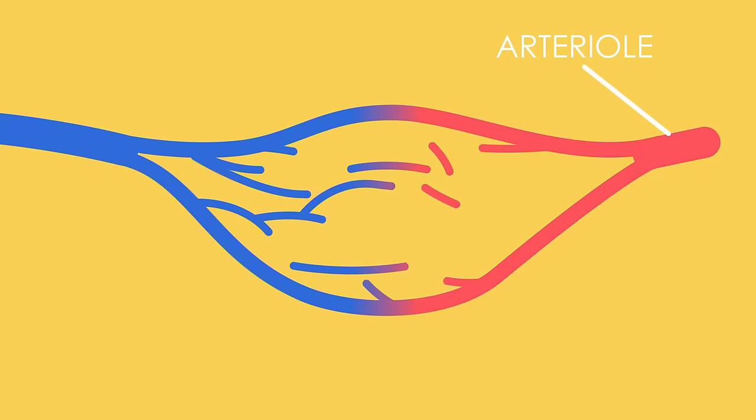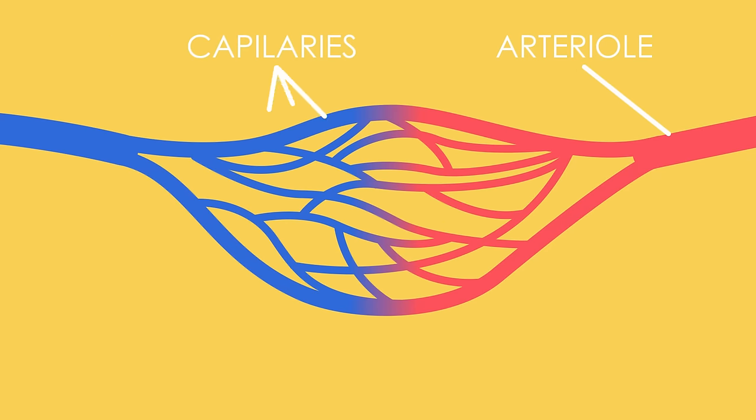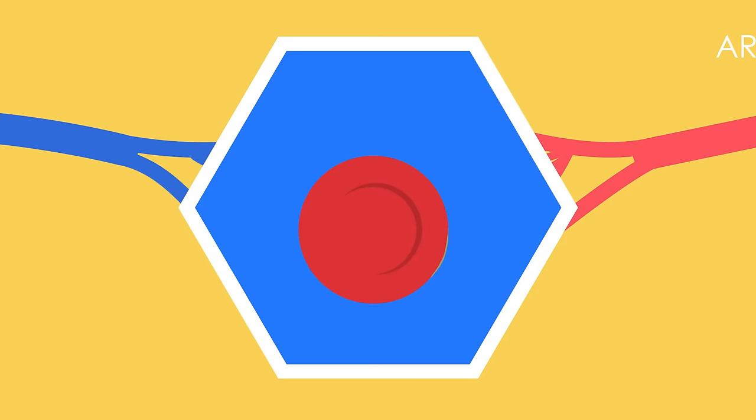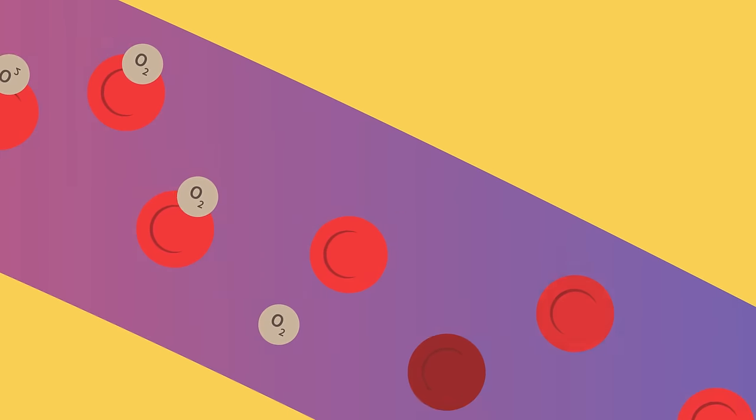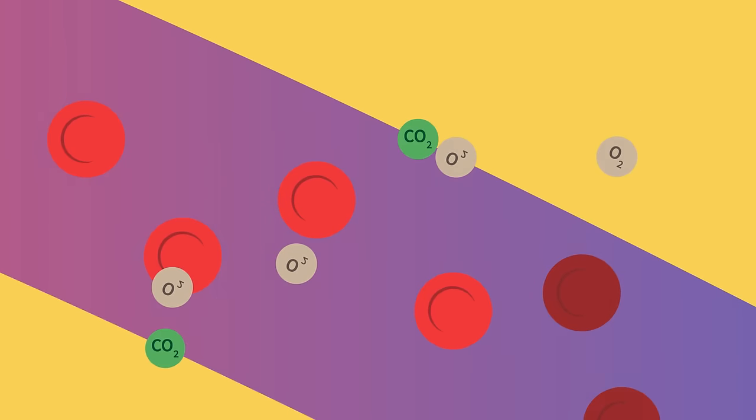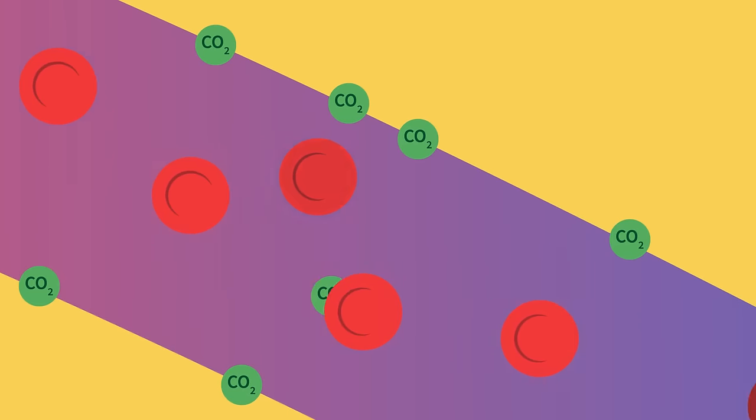The movement of blood slows down significantly at the capillaries for two reasons: the capillaries are much smaller, and slower movement allows for gas exchange. Here, oxygen is offloaded onto cells so blood becomes deoxygenated, and carbon dioxide and other waste products are picked up.